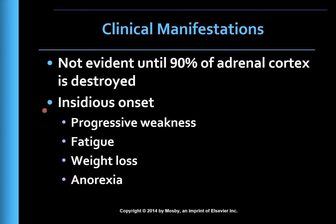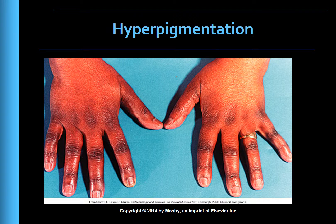Because manifestations do not tend to become evident until 90% of the adrenal cortex is destroyed, the disease is often advanced before it is diagnosed. The manifestations have a very slow or insidious onset and include progressive weakness, fatigue, weight loss, and anorexia as the primary features. Increased ACTH causes the striking feature of bronze-colored skin or hyperpigmentation, seen primarily in sun-exposed areas of the body, at pressure points, over joints, and in the creases, especially the palmar creases.